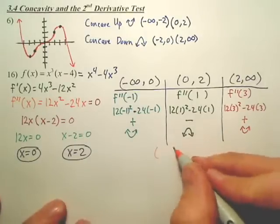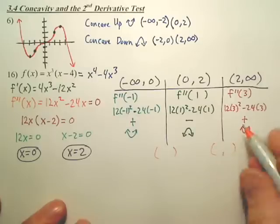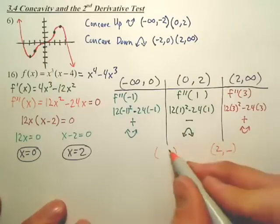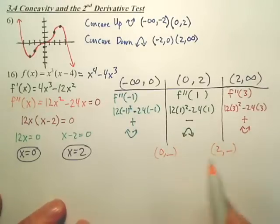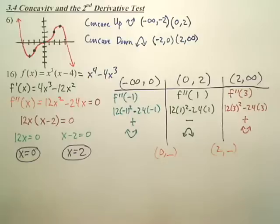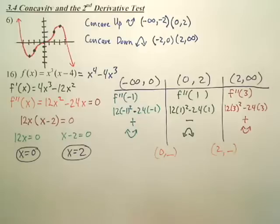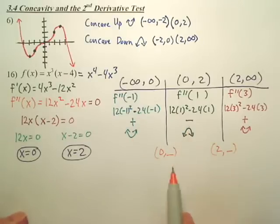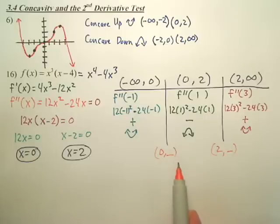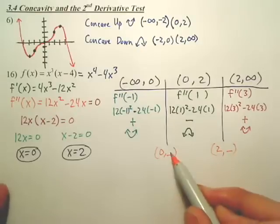So our question is, these points right here, this is going to be 2 something, this is going to be 0 something, are these points going to be points of inflections? Does the concavity change? Yes. For both of these? Yes. So they are points of inflections. Now if you went from positive to positive, it's not a point of inflection.